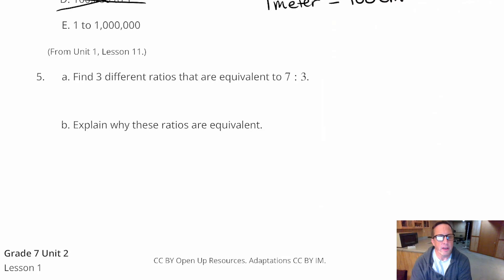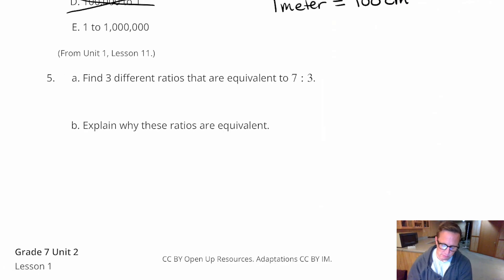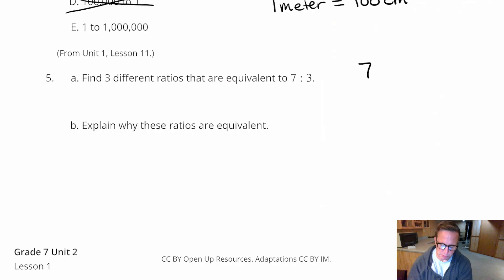For number five, it says find three different ratios that are equivalent to seven to three. Okay. So I'm just going to start with seven over three, or seven to three, the way it's written. And let's say I just use a scale factor of two. So seven times two, three times two. Seven times two is fourteen. Three times two is six. Let's say I use a scale factor of ten. Doing a scale factor of ten is pretty easy because I just add a zero. So seven times ten is seventy. Three times ten is thirty.